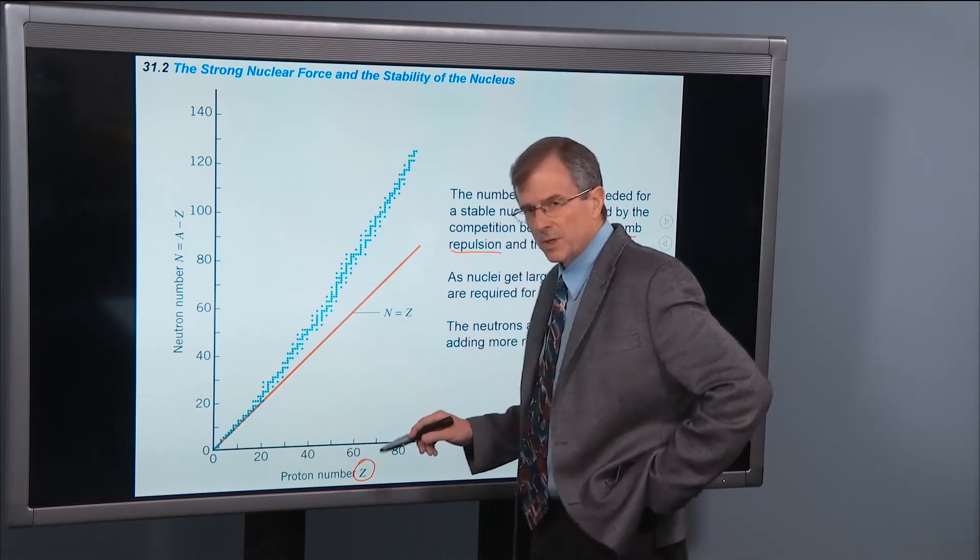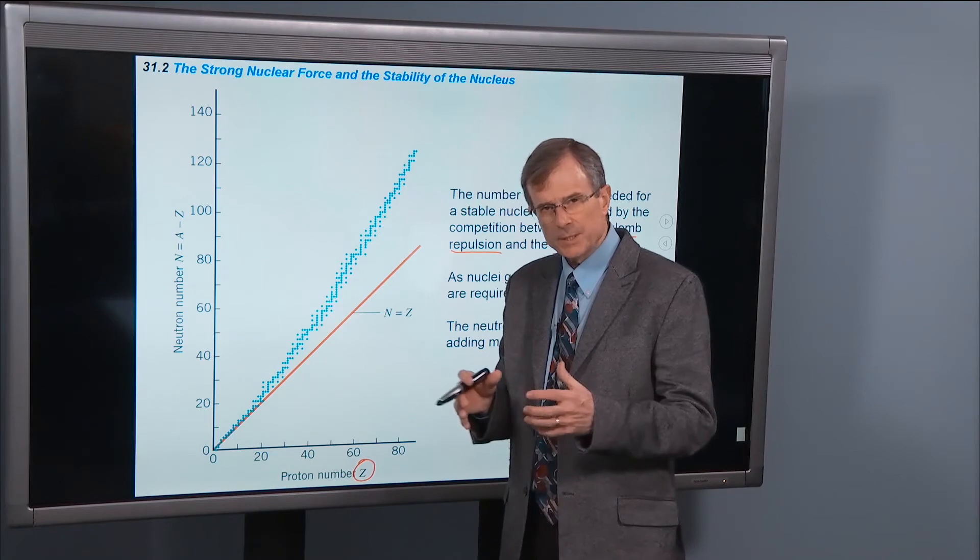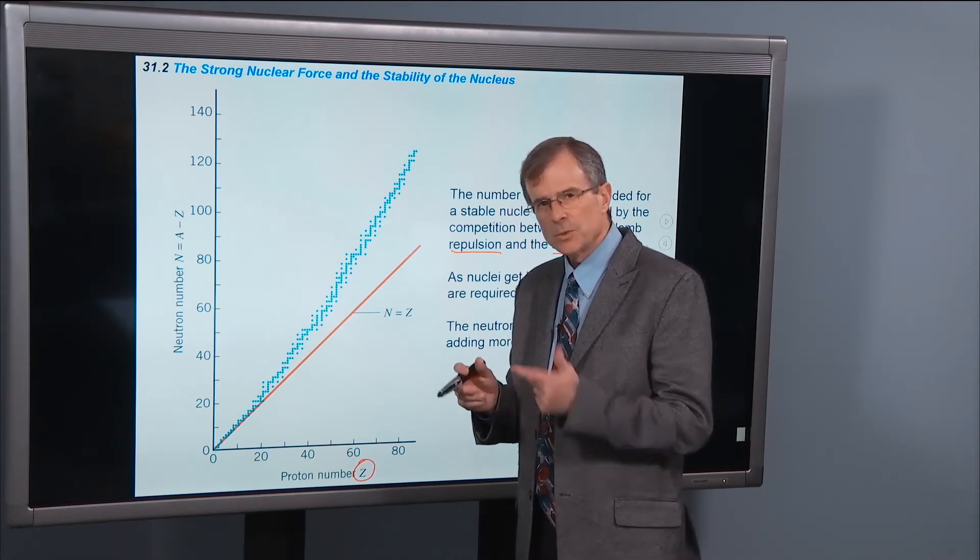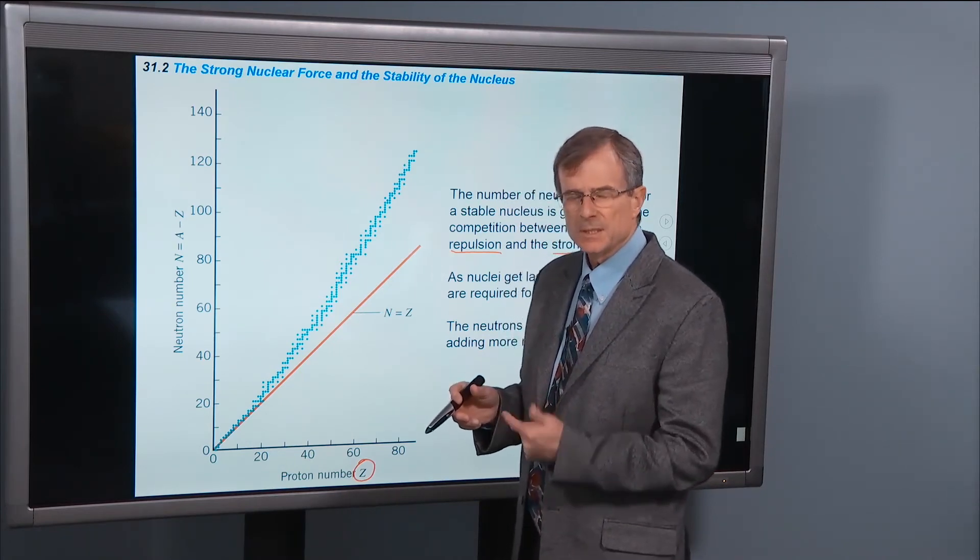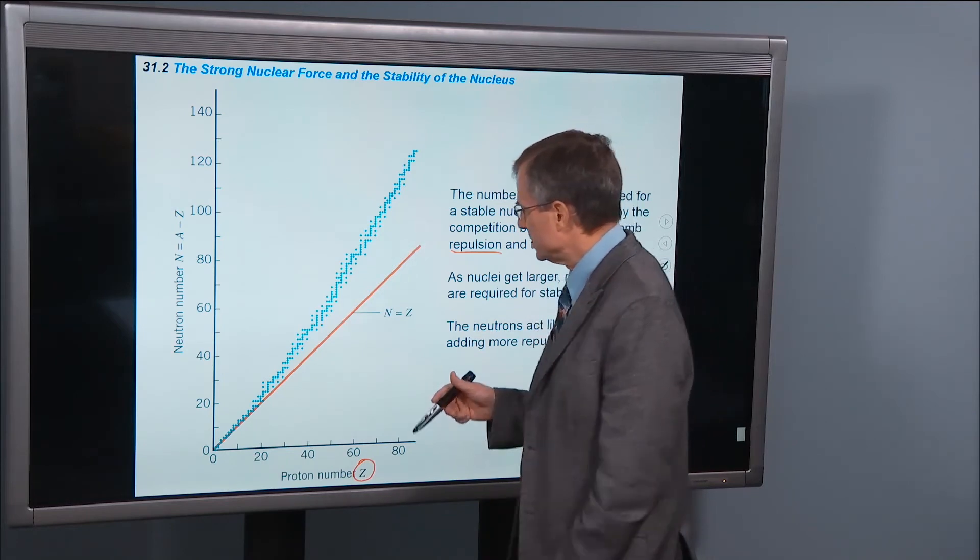As you increase the number of protons, that coulombic repulsion gets greater and greater. And so what you need for a stable nucleus is to add more and more neutrons in.